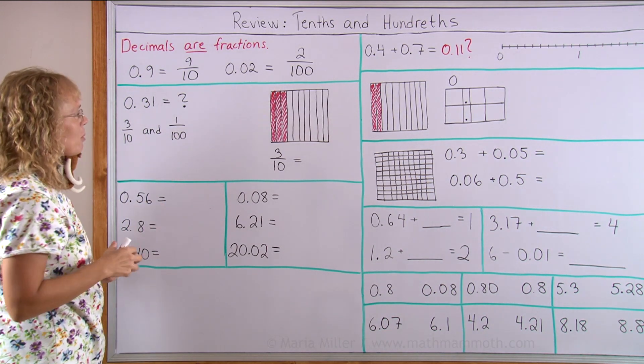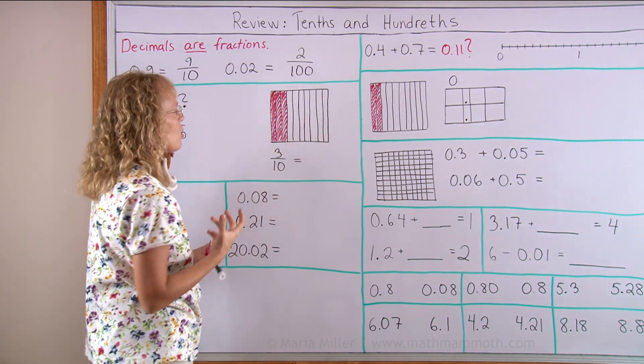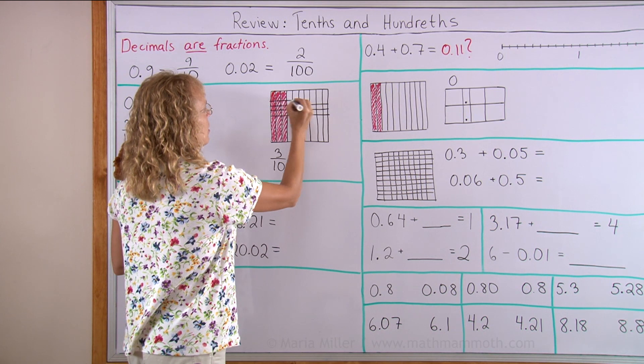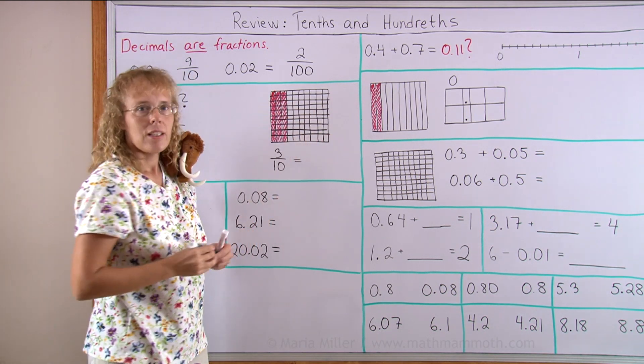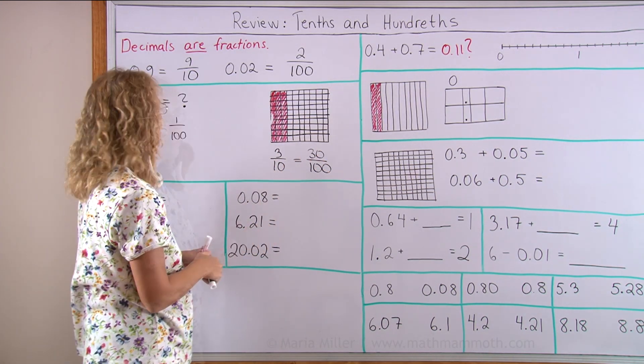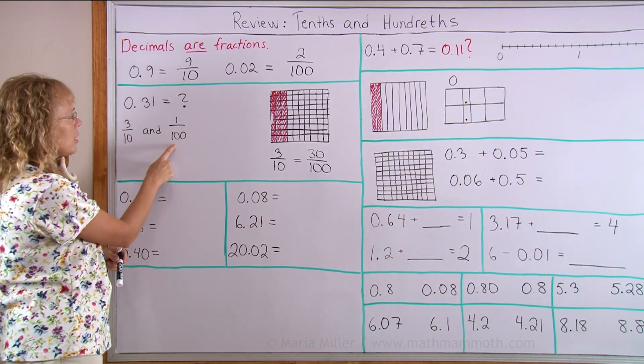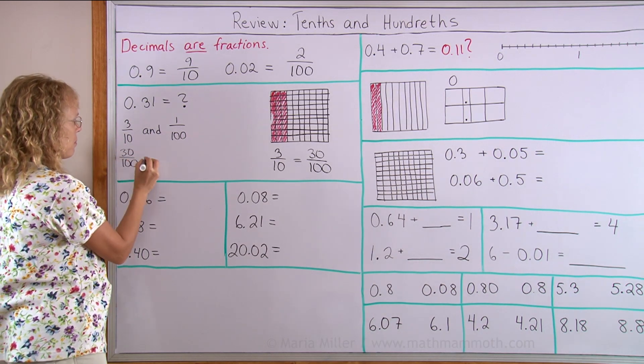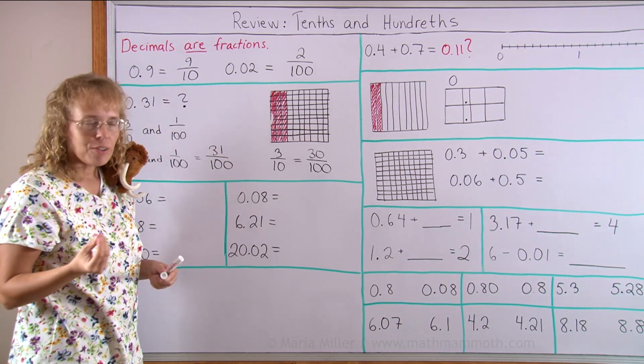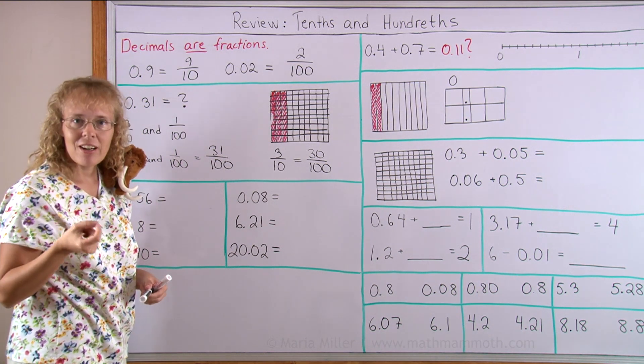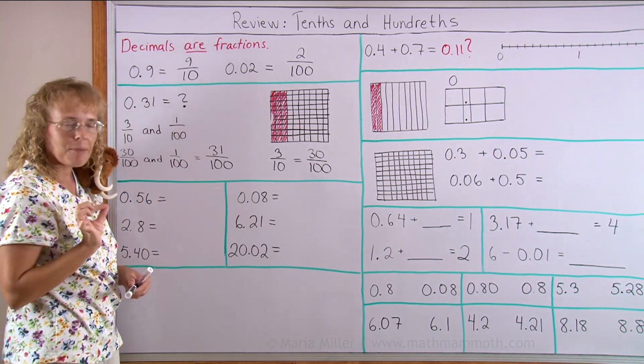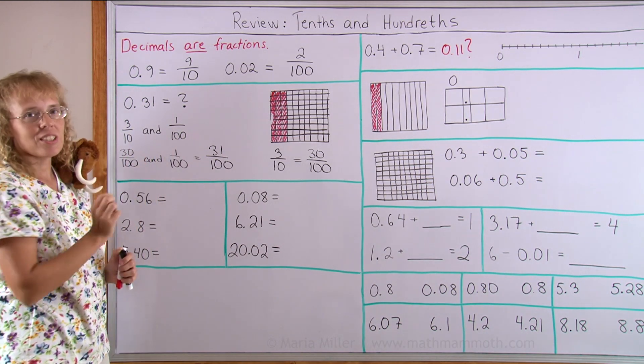We are going to look at this decimal in a little bit more detail. Here I drew a little illustration to show 3 tenths. If I divide this into hundredths, now you can see that this is also 30 hundredths. So this here is 30 hundredths, this is 1 hundredth. Now we can add, there's a total of 31 hundredths. Therefore, this decimal here is read as 31 hundredths because it has 2 decimal digits.